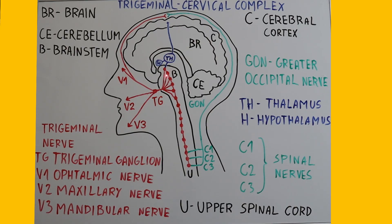The nerve fibers from these nuclei come together and form the trigeminal ganglion just beyond the brainstem, which acts as a major relay station. After that, the trigeminal nerve splits into three branches: the ophthalmic nerve V1, the maxillary nerve V2, and the mandibular nerve V3.